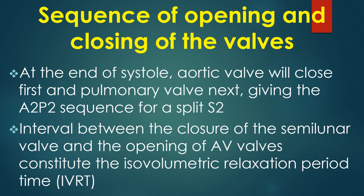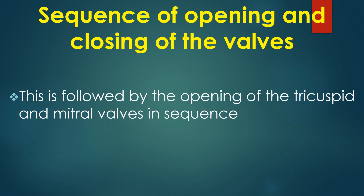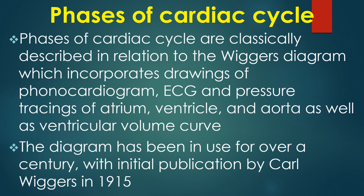The interval between closure of the semilunar valves and the opening of the AV valves constitutes the isovolumetric relaxation period, followed by the opening of the tricuspid and mitral valves in sequence. Phases of the cardiac cycle are classically described in relation to the Wiggers diagram, which incorporates drawings of phonocardiogram, ECG and pressure tracings of the atrium, ventricle and aorta, as well as the ventricular volume curve. The diagram has been in use for over a century, with initial publication by Carl Wiggers in 1915.